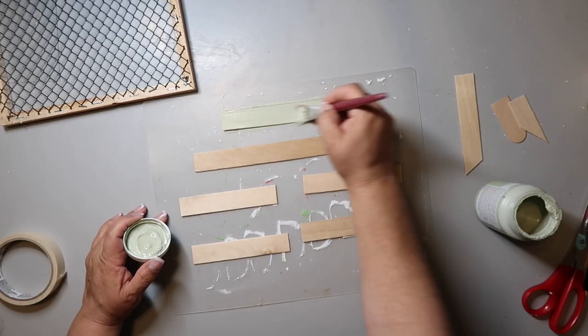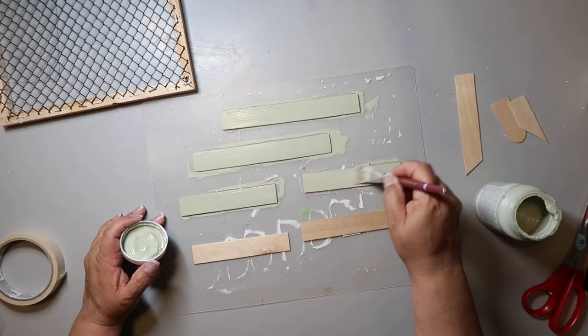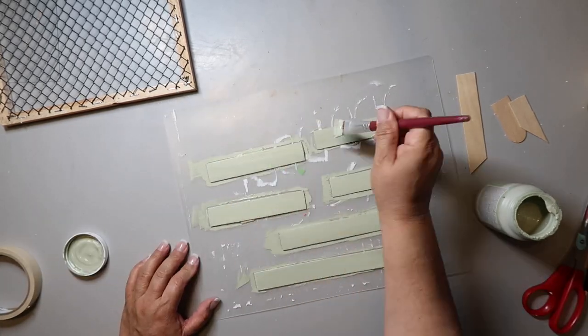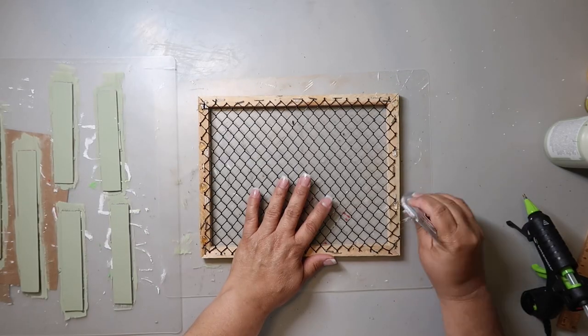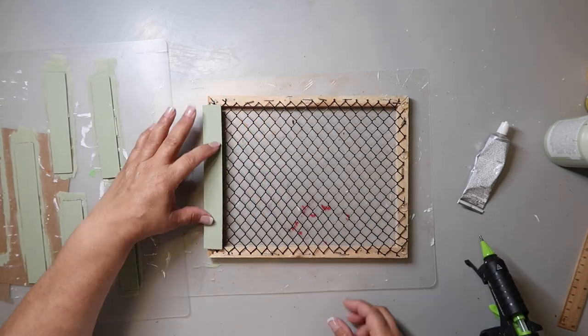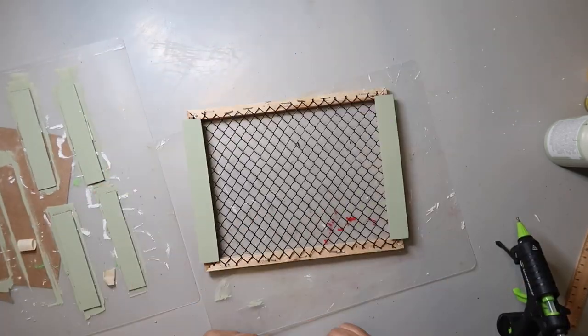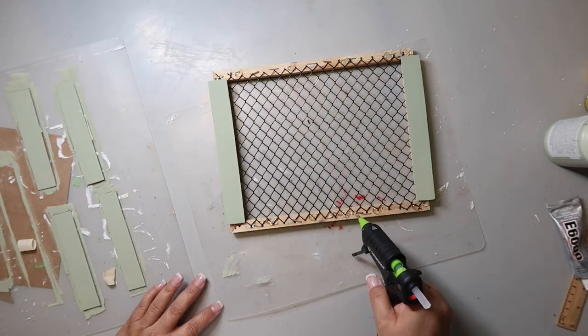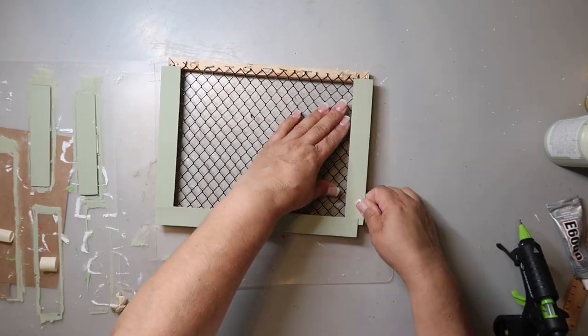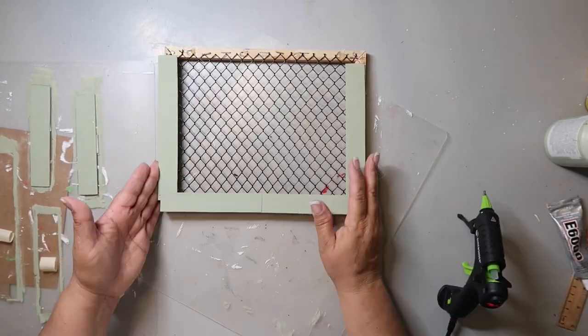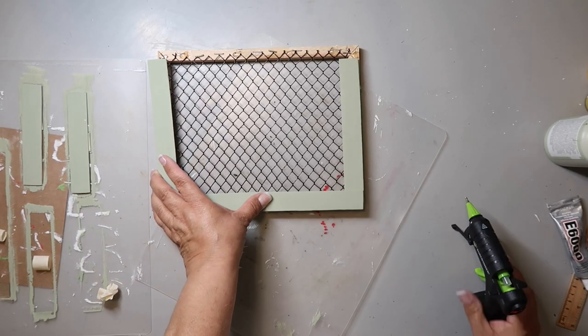And now I'm going to paint these jumbo craft sticks with the Waverly chalk paint in the color celery. Remember all the projects today are using celery. I did use some masking tape to hold them down to the mat that I was painting on. And then I used a combination of hot glue and E6000. And really it was just the hot glue holding everything together. But then I start assembling the frame. And then I noticed like it's not lining up.